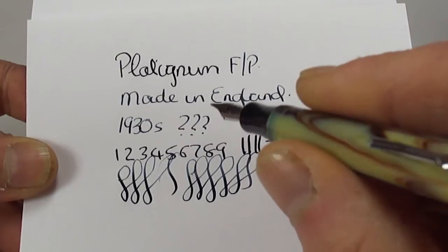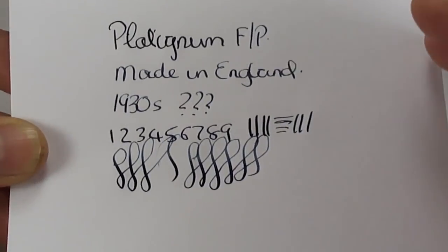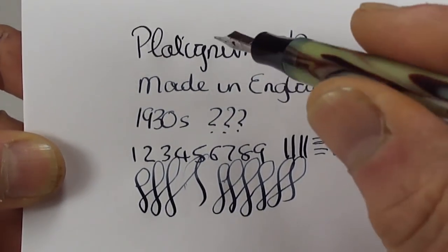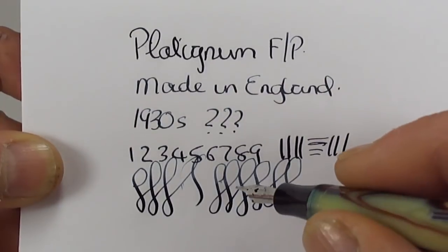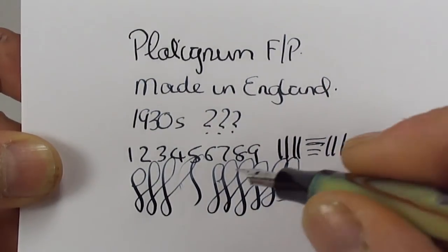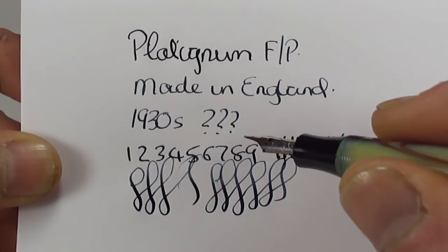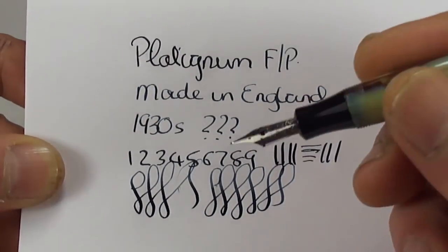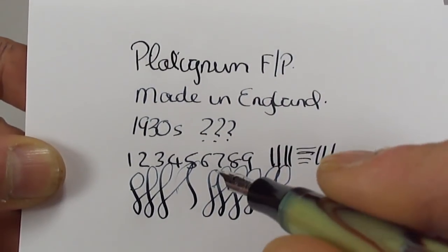But a lovely, lovely writer. So there's the writing sample. I would say a fine line, but with a little pressure, as you can see, we can get a little bit of variation in the line. But all in all, very surprised. Lovely, lovely writer.